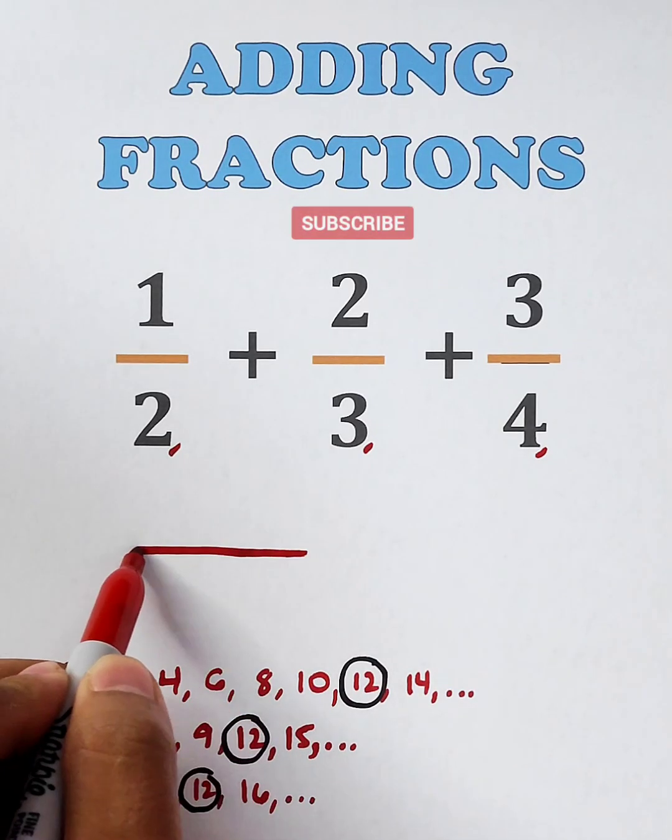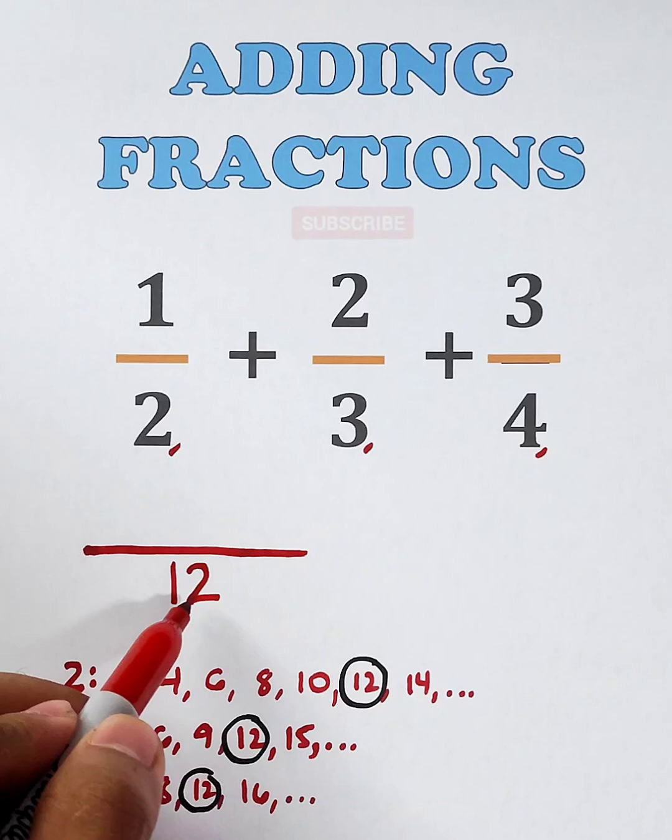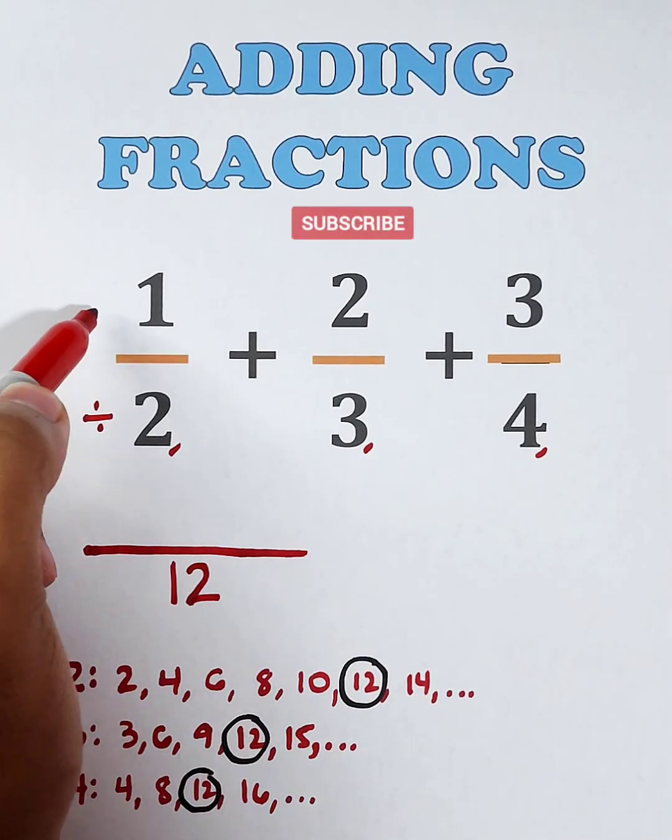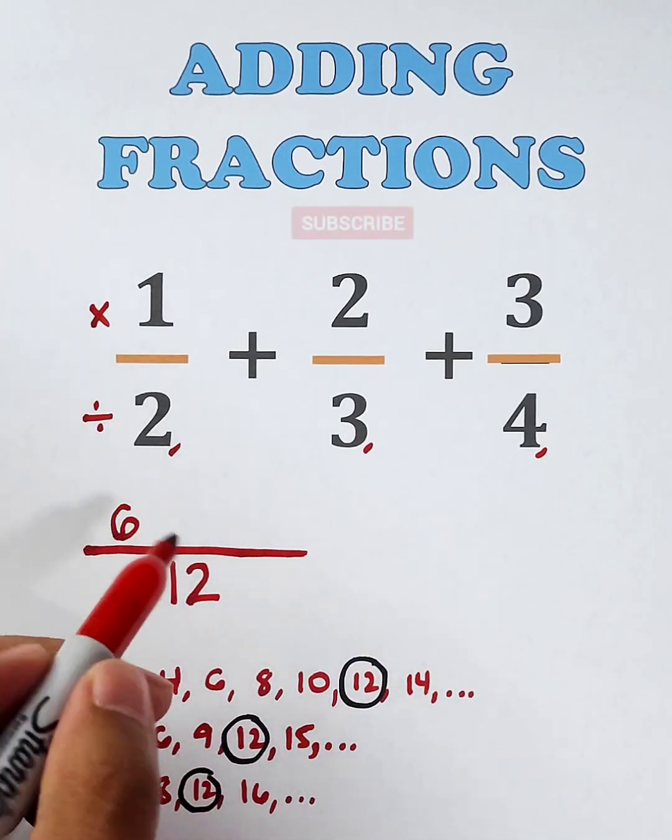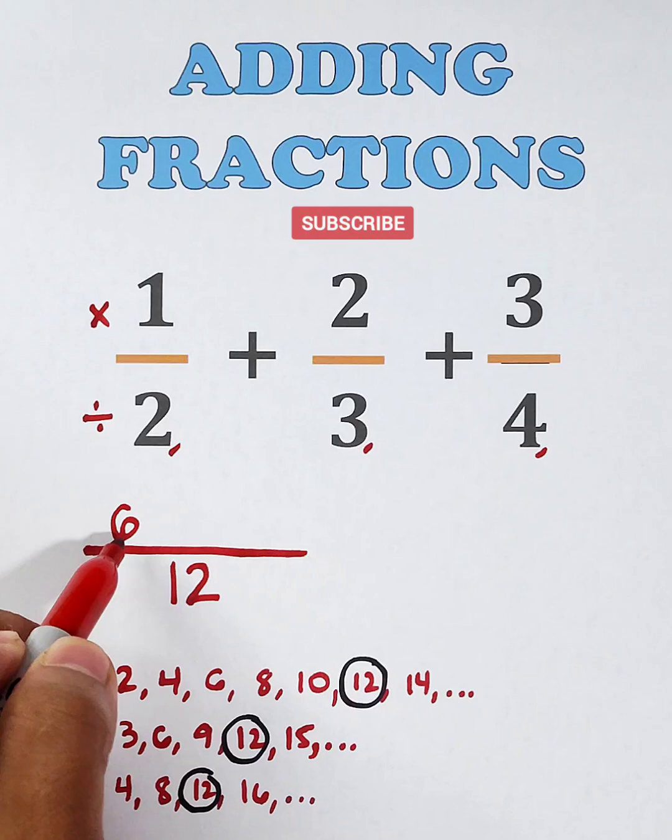Now, let's add them. So, we have to divide 12 by 2, and that is 6, and then multiply it by the numerator, that would be 6. Again, 12 divided by 2 is 6 times 1, that is 6.